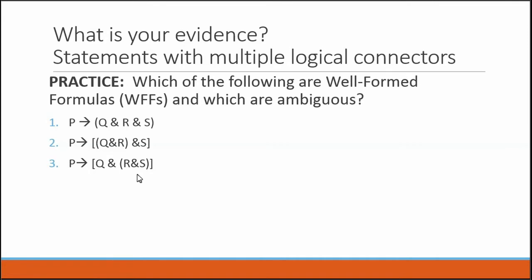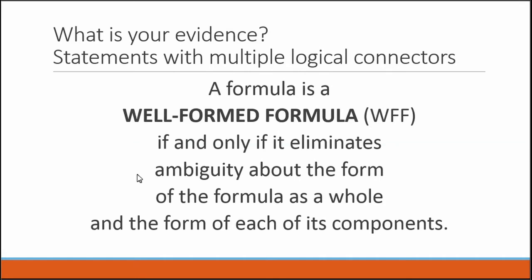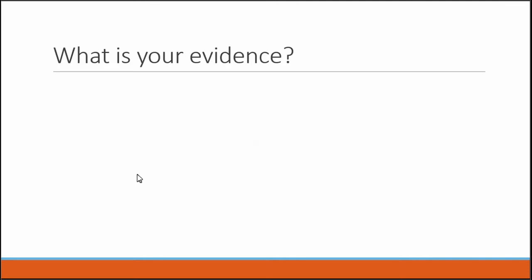One more practice to make sure we fully understand grouping symbols. A well-formed formula eliminates ambiguity about both the form of the formula as a whole and the form of each component. Before concluding this lesson, let's practice using the arrow-out rule when we have formulas with either a compound antecedent or a compound consequent.